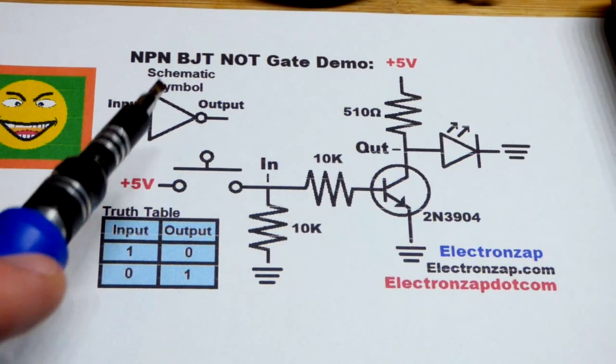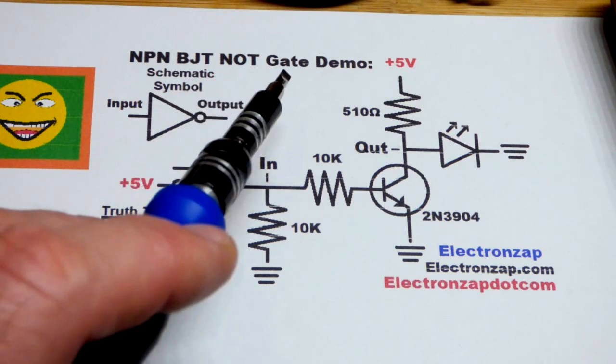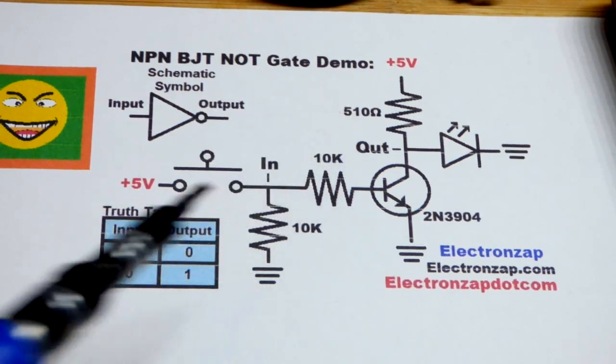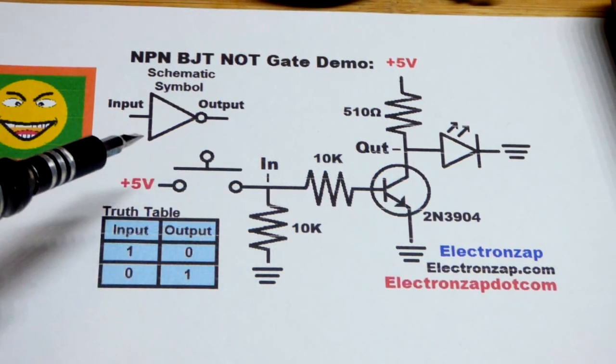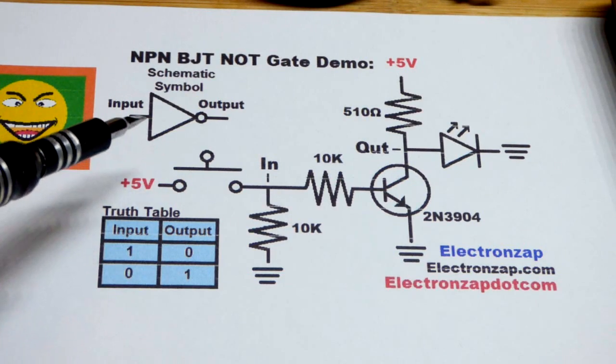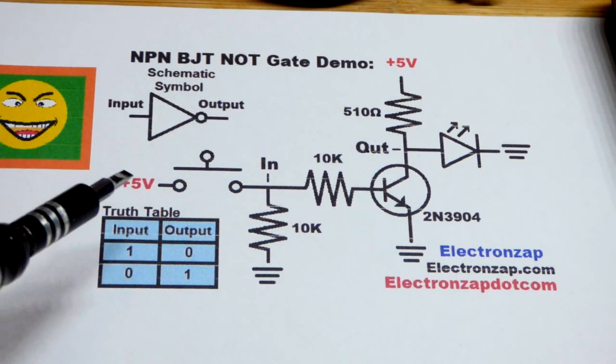So now in this video, we're going to look at the NPN bipolar junction transistor wired as a NOT logic gate. This is just a demonstration video, more of a visual to give you an idea of what's going on. The actual NOT gate, if you need one, there's integrated circuits with usually six of them within it.